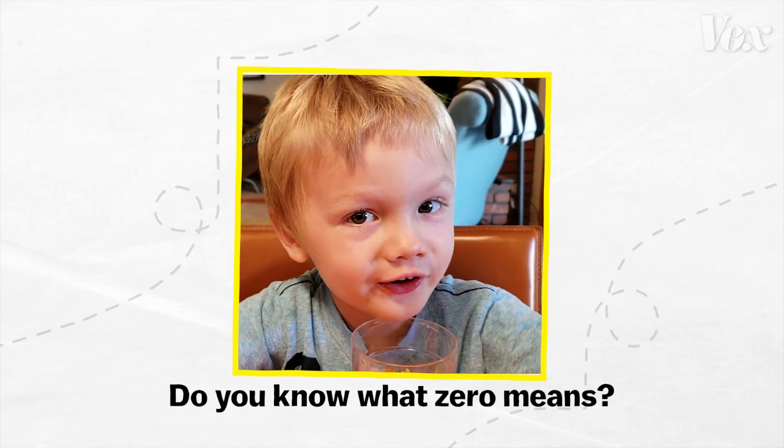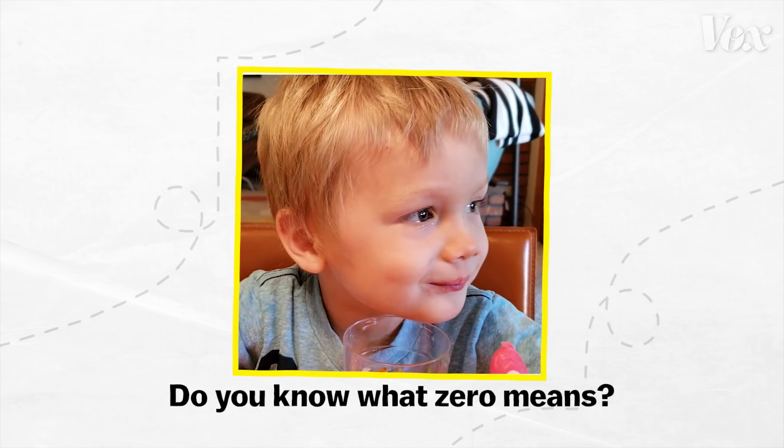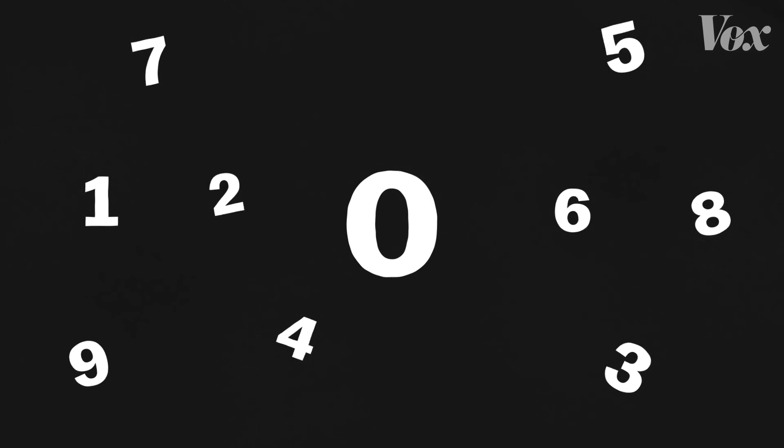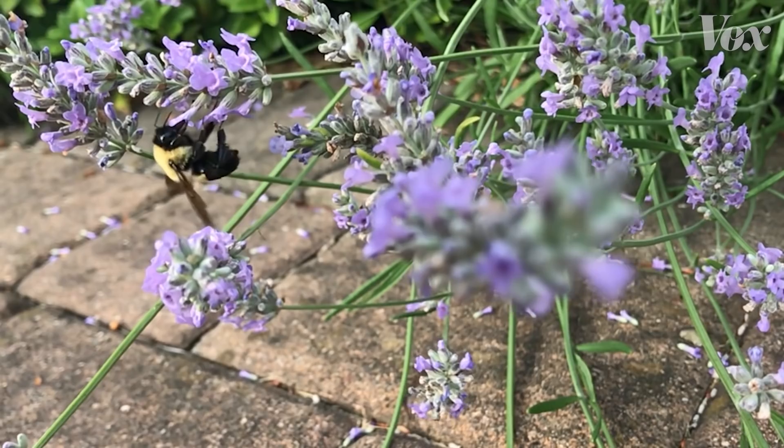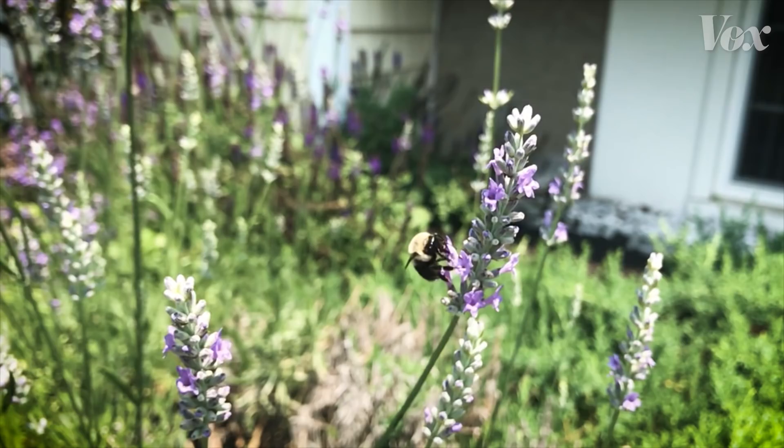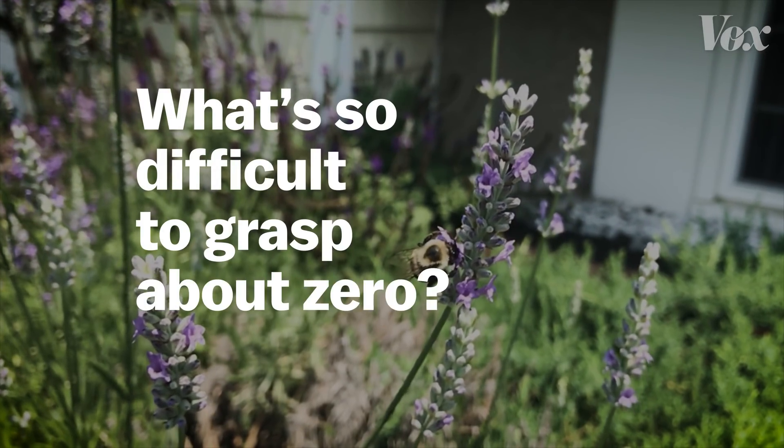It's none. They might be able to tell you that zero is nothing, but they don't understand that it's a quantity like other numbers, a concept that even a tiny bumblebee can learn. So what's so difficult to grasp about zero?